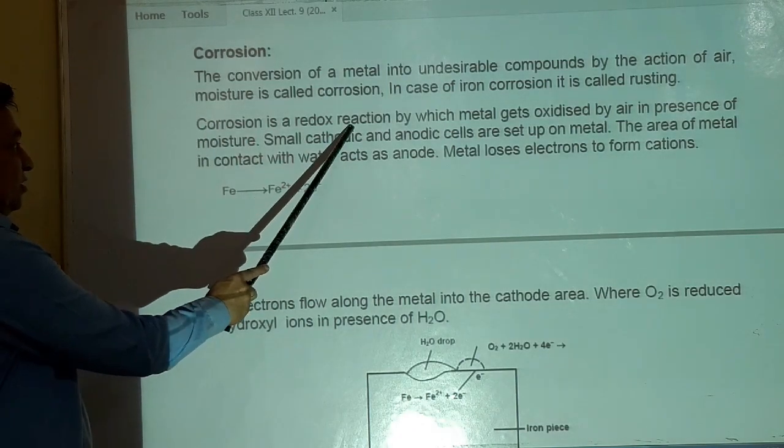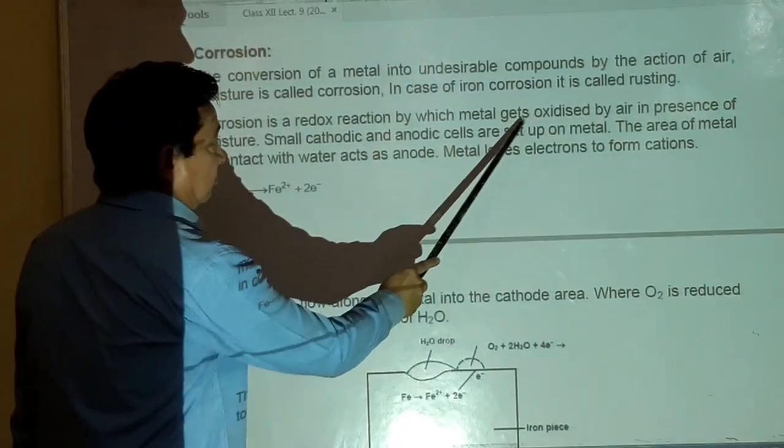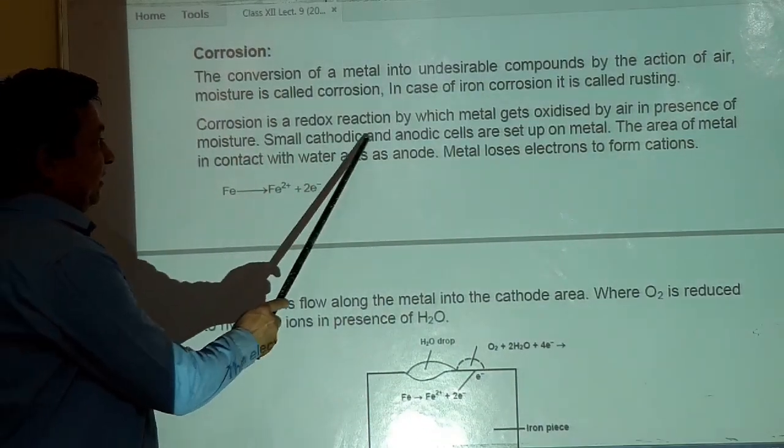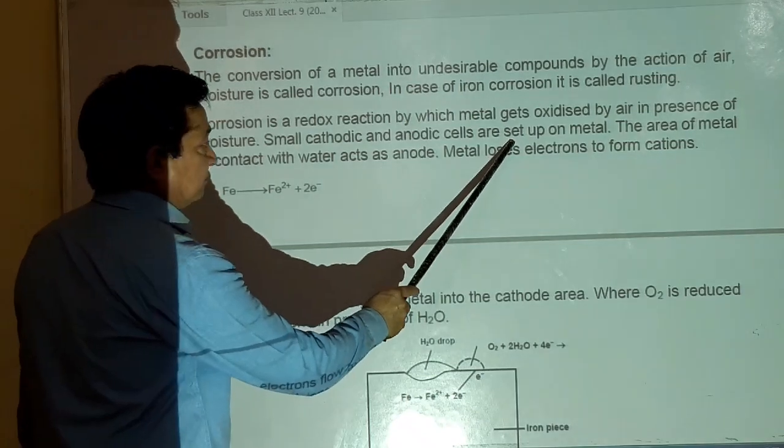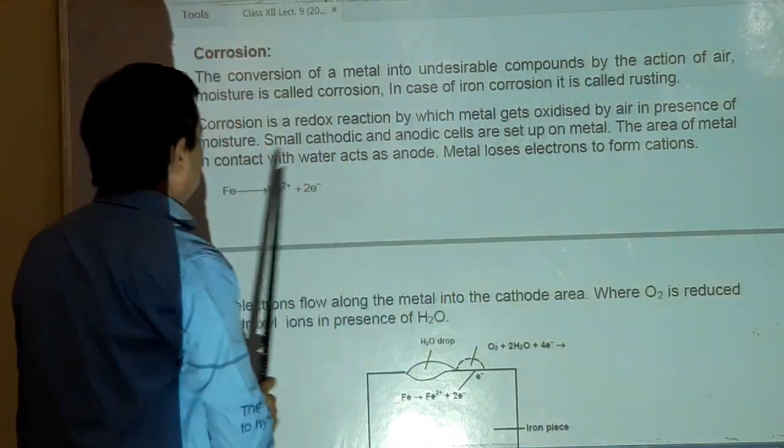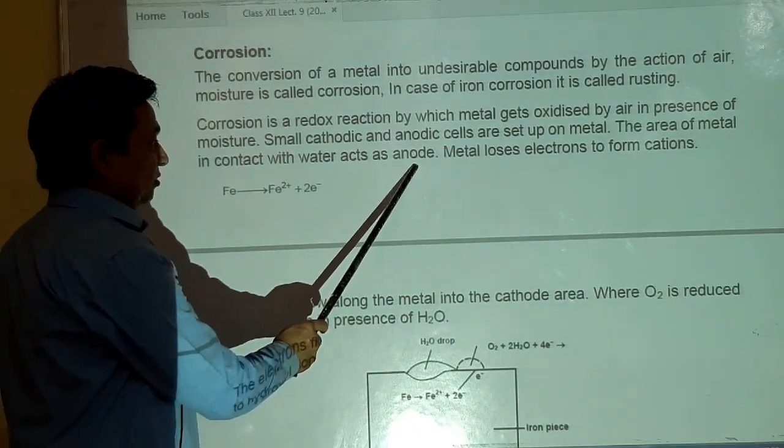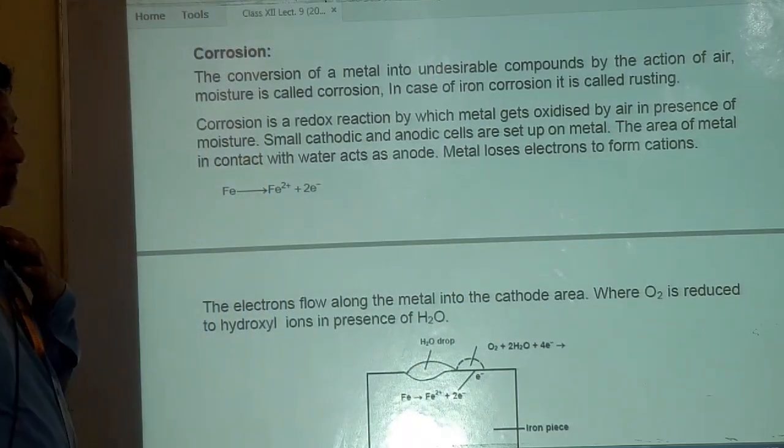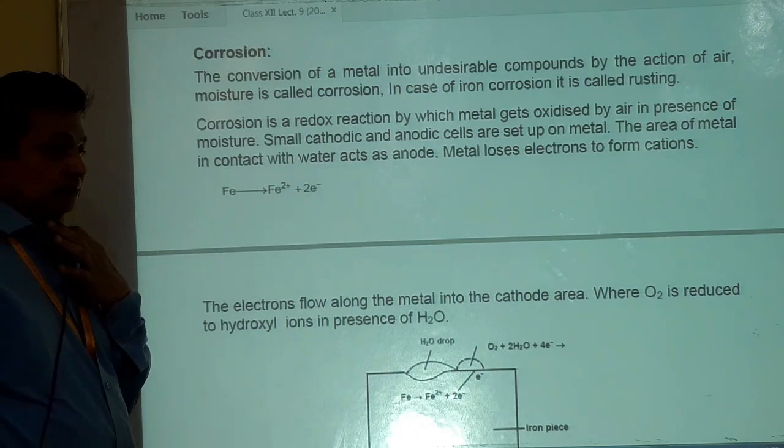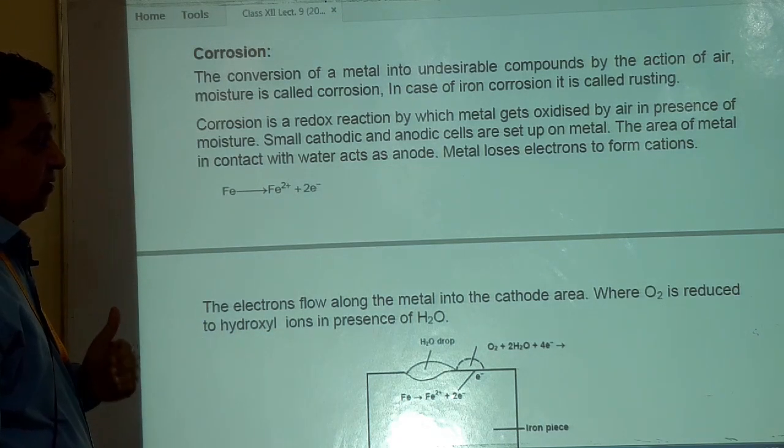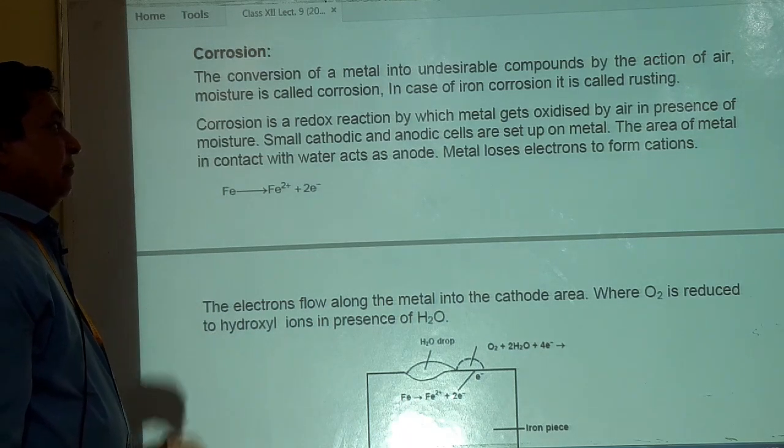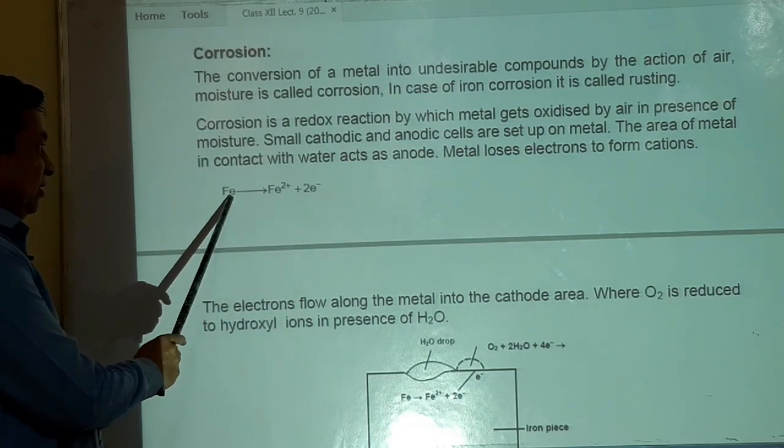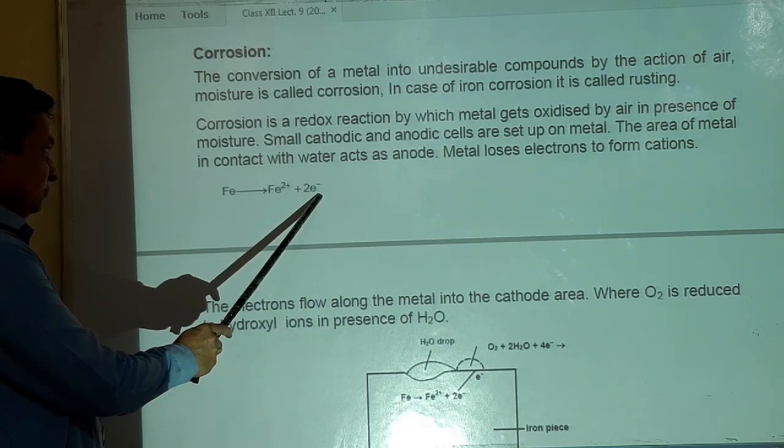Corrosion is a redox reaction by which metal gets oxidized by air in the presence of moisture. Small cathodic and anodic cells are set up on metal. The area of metal in contact with water acts as anode. Metal loses electron to form cation. जो electrochemical cell होता है जिसमें एक anode होता है और एक cathode होता है. Anode पर oxidation और cathode पर reduction. वो ही principle इसमें apply होता है corrosion में, rusting of iron में. तो यह iron Fe oxidized हुआ किसमें Fe 2+ plus 2 electrons. Oxidation.